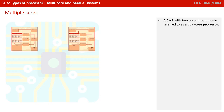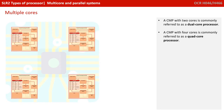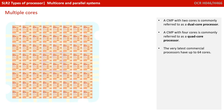A CMP with two cores is commonly referred to as a dual-core processor. A CMP with four cores is commonly referred to as a quad-core processor. The very latest commercial processors at the time of making this video had up to 64 different cores.